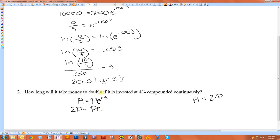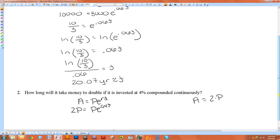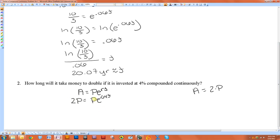P times E, and R in this case is .04T. Now notice if we want to get this E by itself, when we divide both sides by P, the P's cancel out, giving me just 2 equals E to the .04T.